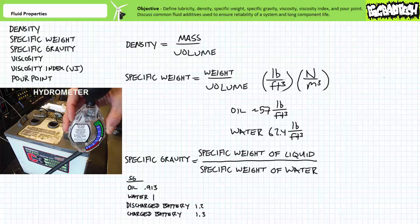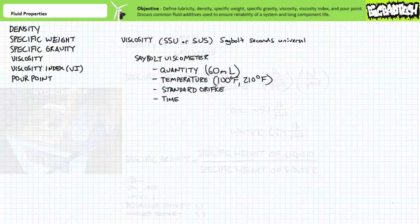Note properties like density, specific weight, and specific gravity are temperature and pressure dependent. Tools like hydrometers must therefore be temperature compensated if they are to deliver accurate results.